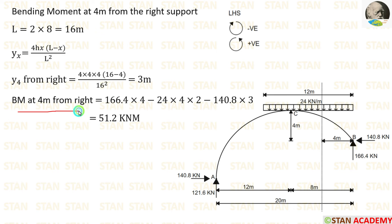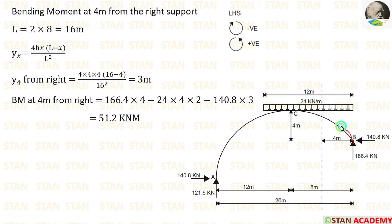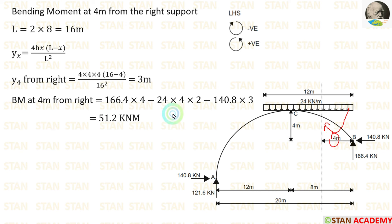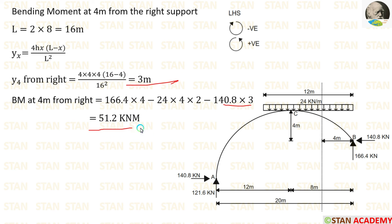Now let us calculate the bending moment at 4 meter from point B. We are moving towards the left-hand side — clockwise will be negative, anticlockwise will be positive. The vertical reaction of 166.4 kN is acting anticlockwise, so it will be positive with a distance of 4 meter: 166.4 × 4. The UDL is acting in the clockwise direction, so it will be negative: minus 24 × 4 × 4/2. The horizontal thrust is acting in the clockwise direction, negative, with the height of 3 meter. Finally, we are getting a bending moment of 51.2 kNm.